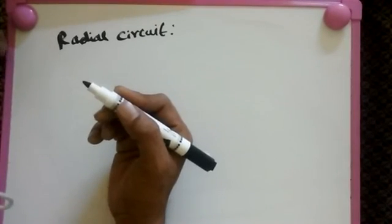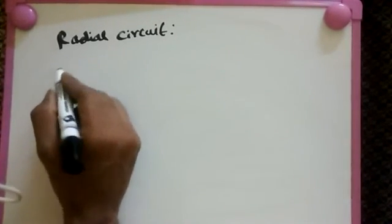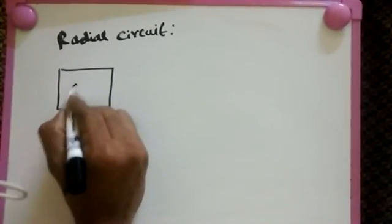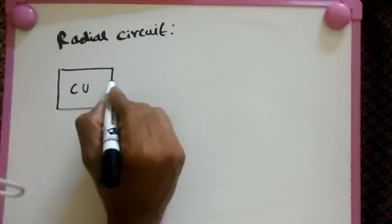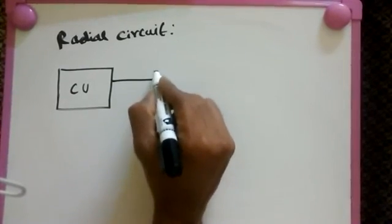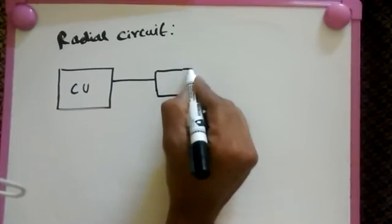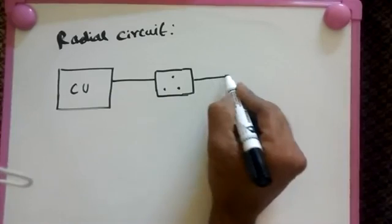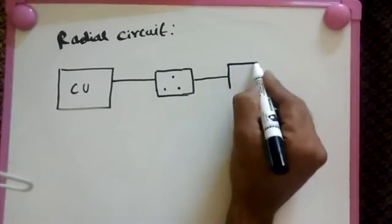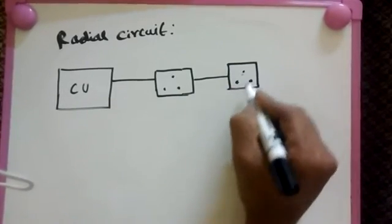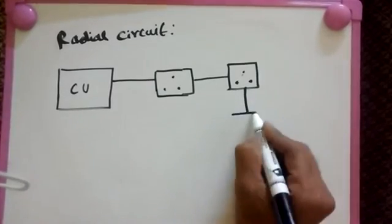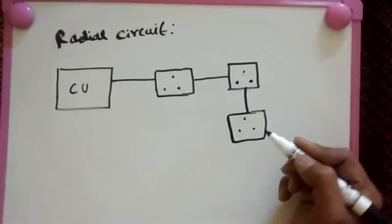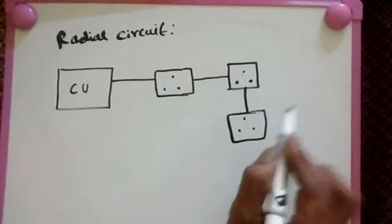First, whatever you have in the consumer unit, you take from there. Then here one socket, here another socket, here another socket. However many sockets you want, they continue in this manner.